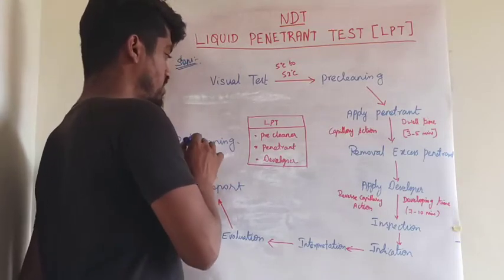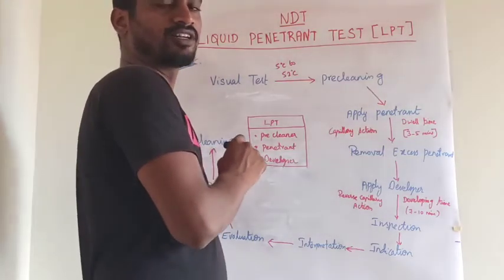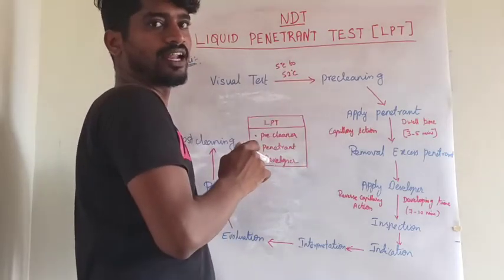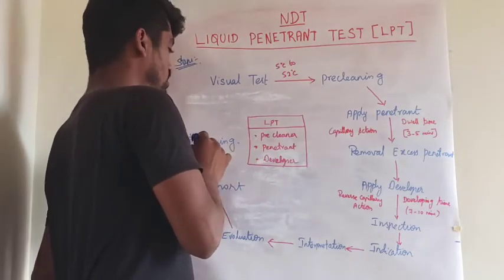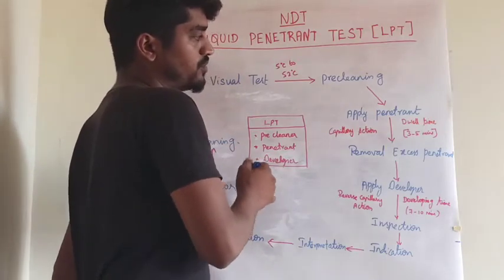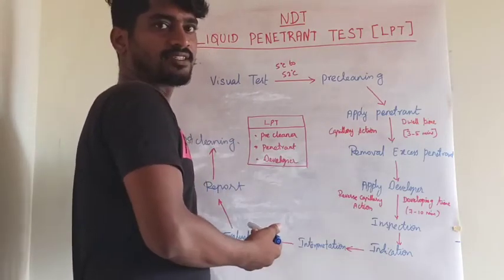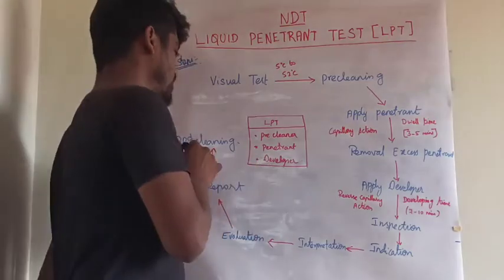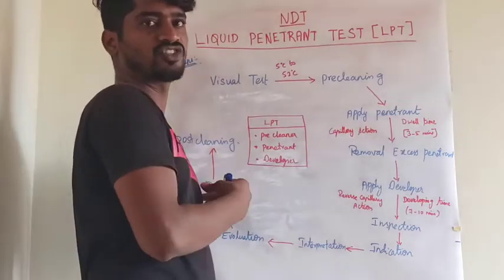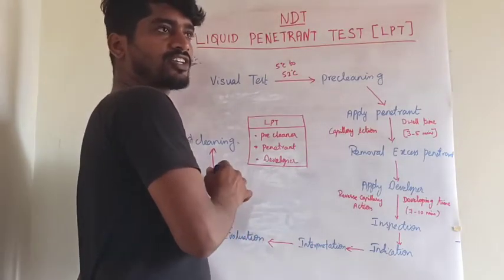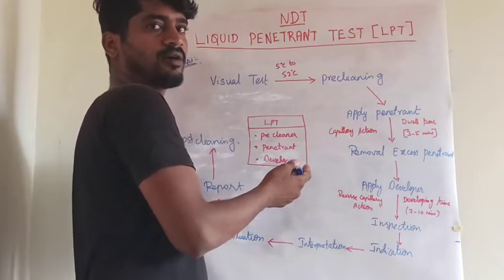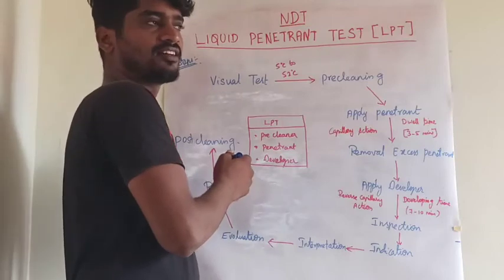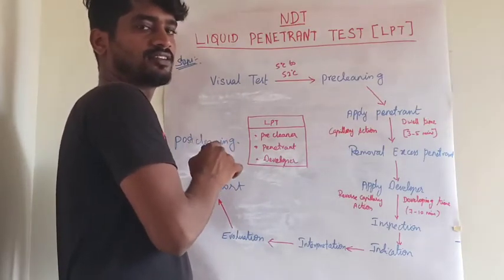The final step is post-cleaning. Post-cleaning is very important to clean the metal after the LPT process. In this post-cleaning process, we have to remove all excess penetrant and developer from the surface of the inspected metal. If post-cleaning is not carried out, it may affect the next operation. So we must post-clean the inspected metals.